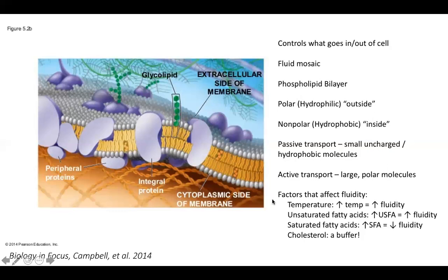Factors that can affect fluidity are temperature, whether or not the tails are saturated or unsaturated, and whether or not there's cholesterol present. If you increase the temperature, the membrane gets more fluid. If the tails are unsaturated, they're bendy, so they introduce space and therefore your membrane will be more fluid. Saturated fatty acids are straight lines, so they pack really tightly and you'll end up with decreased fluidity of your membrane.